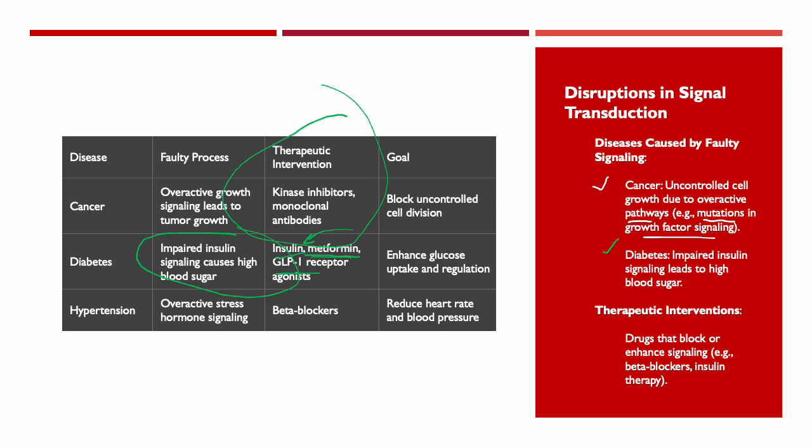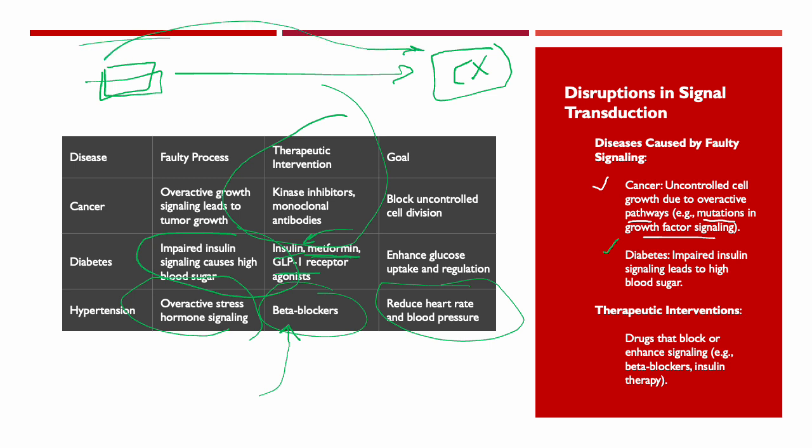If we have hypertension due to overactive stress hormone signaling, we can give the medications called beta blockers to reduce heart rate and blood pressure. This is a direct example of signaling issues at this very basic level to clinical concerns like hypertension, cancer, diabetes, etc. as it directly correlating to issues at this fundamental level.